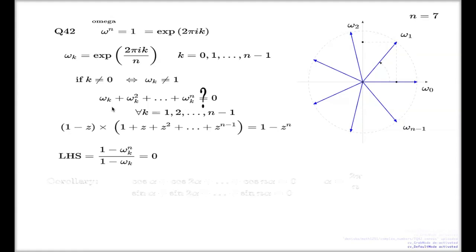n. Because in that case, omega_0 is 1. Any power of omega_0 is 1. Again, you just have sum of n different units, of n units, which is n.